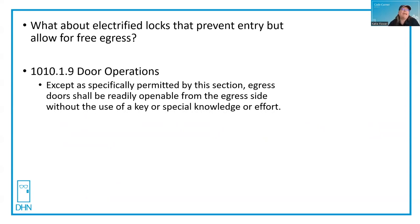For all other doors, Section 1010.1.9 for door operations is in effect: egress doors shall be readily openable from the egress side without the use of a key, special knowledge, or effort. If UL 294 isn't referenced here, then you don't need it for standard electrified hardware that allows free egress. You may be able to use this citation to talk to your AHJ and get them to see your side.